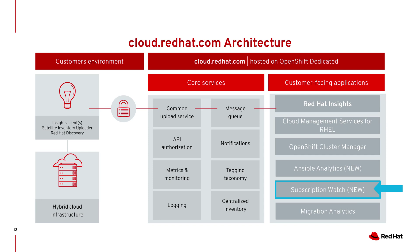Architecturally, Subscription Watch sits on top of cloud.redhat.com, the same shared platform that many other Red Hat services are delivered on — services such as Insights, Cloud Management Services for RHEL, OCM, and others. This allows us to have a unified API and common services so we don't have to give you a different experience depending on what application you use. On the left-hand side, there are things that may need to be installed in your environment: if you're leveraging Insights, we get a lot of data for Subscription Watch from Insights; if you're a satellite user, you can use the satellite inventory uploader; and if you're not using any Red Hat management tools, Red Hat Discovery allows you to gather inventory of unregistered systems and upload those to the platform. You can use one or more of these — many customers use more than one — and we responsibly deduplicate servers on the back end, so if a system is reported via both Insights and the satellite inventory uploader, it's only counted in the inventory once.